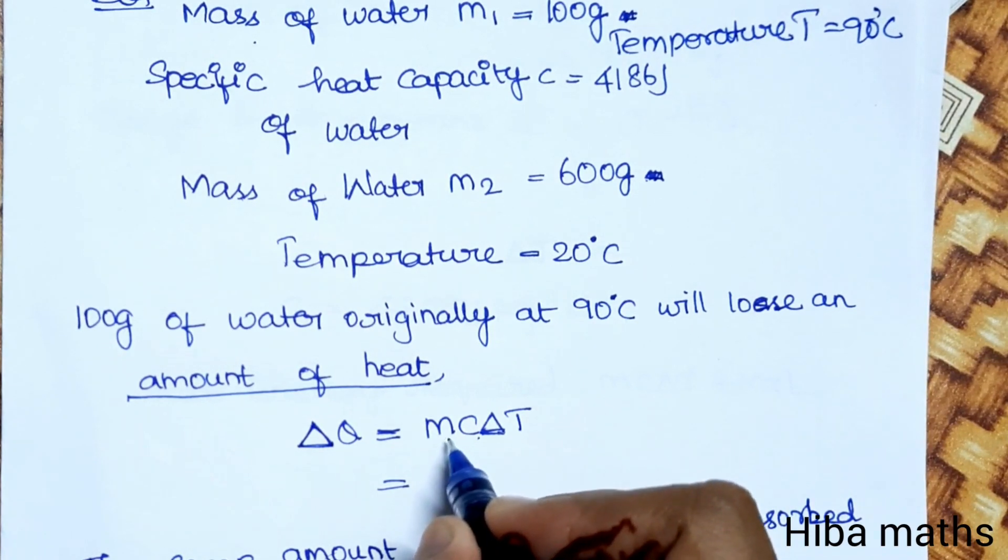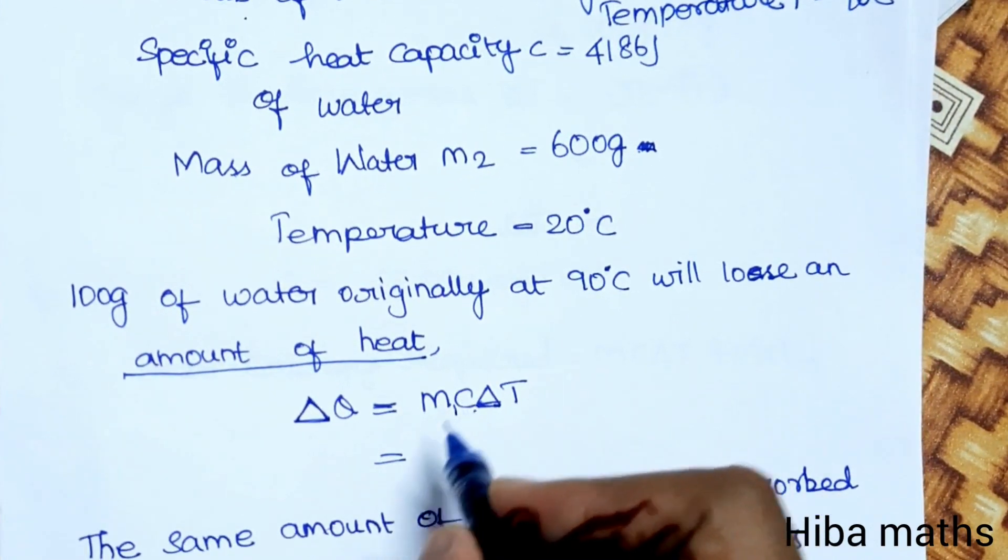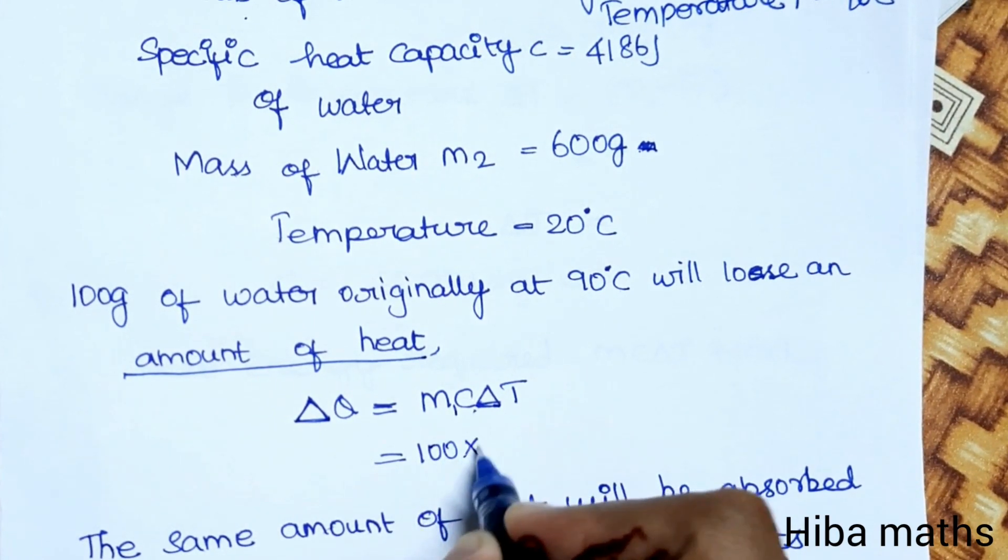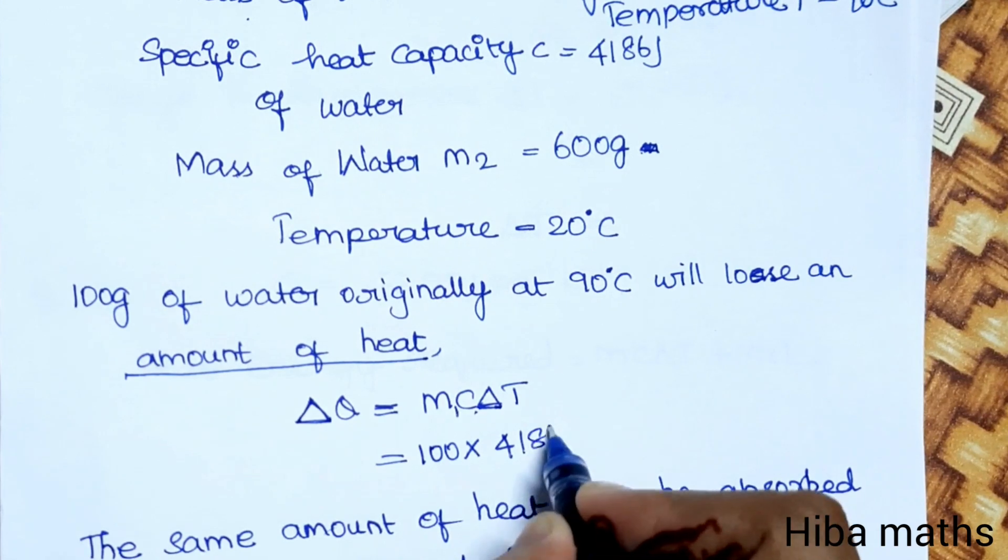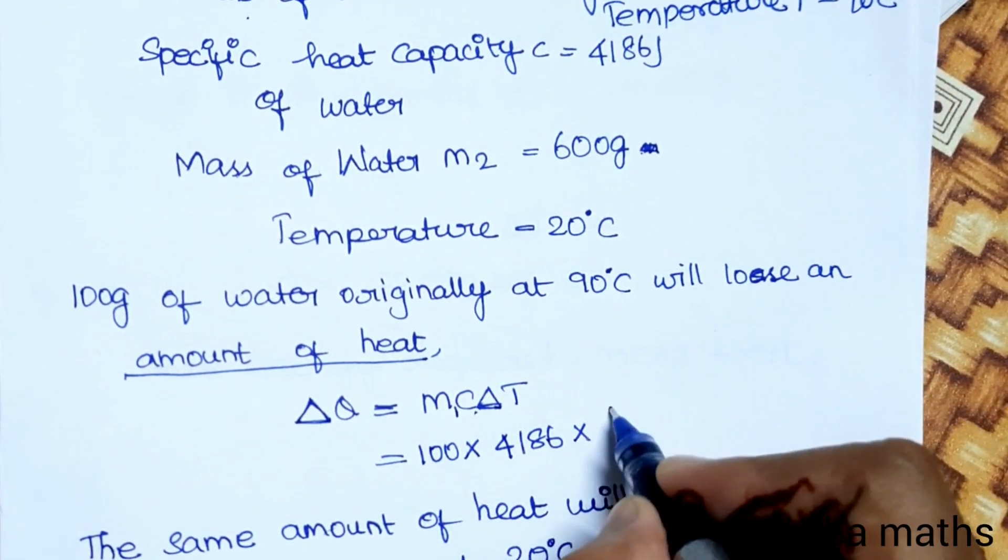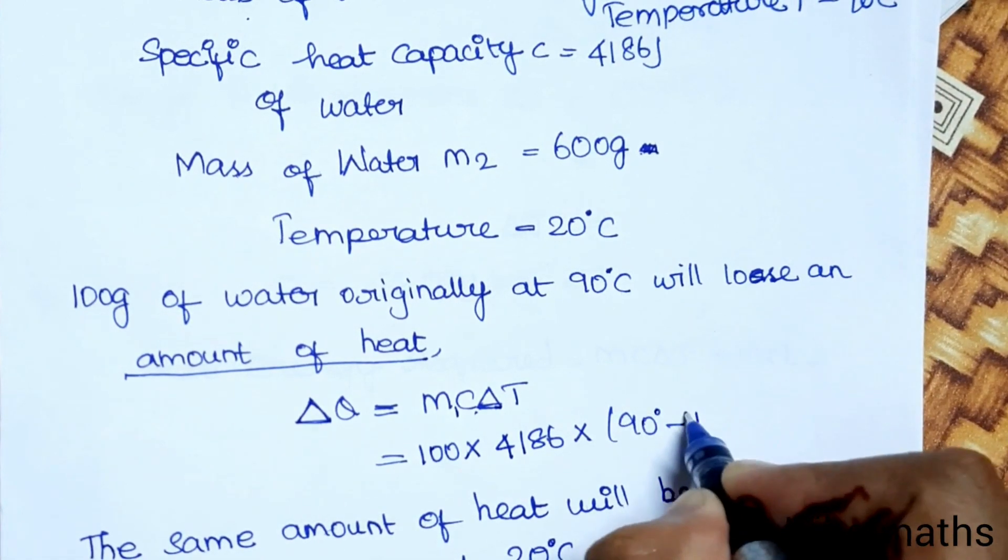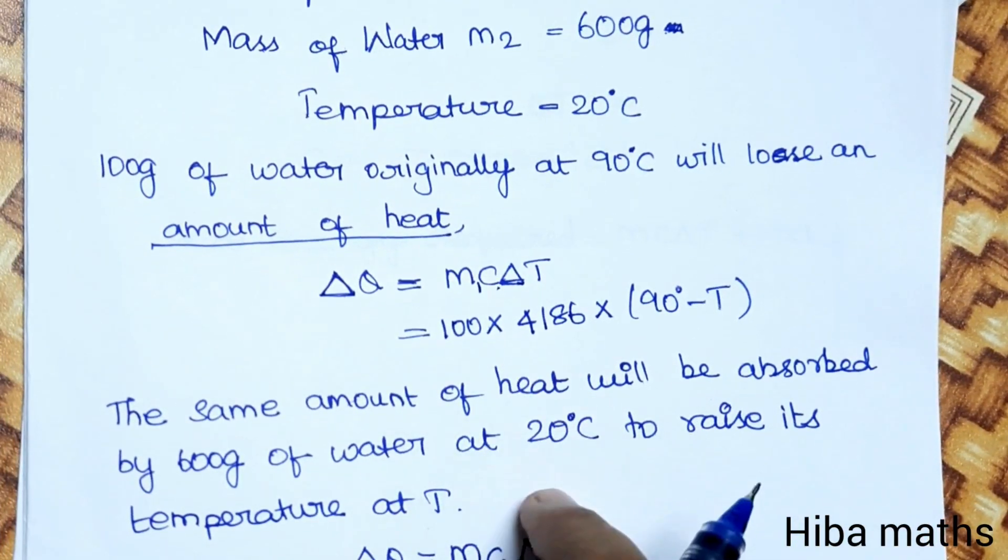Now we know the m value. This is 100 grams of water, so m1 is 100. Into the c value, which is 4186, times the change in temperature, which is 90 degrees minus T.